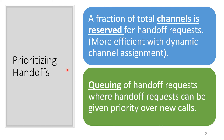Regarding handoff priorities: a fraction of the total channels is reserved for handoff requests. If a user moves from base station A to base station B, base station B may already be serving other users, so we reserve some channels for handoff. This is more efficient with dynamic channel assignment. Another priority is queuing — in a queue of users to be served, we can give priority to handoff requests over new calls, because a person already in a call is more disturbed by a drop than someone being blocked before making a call.